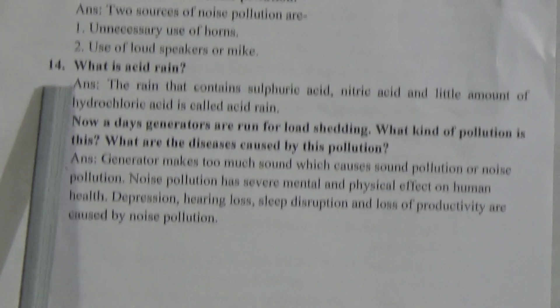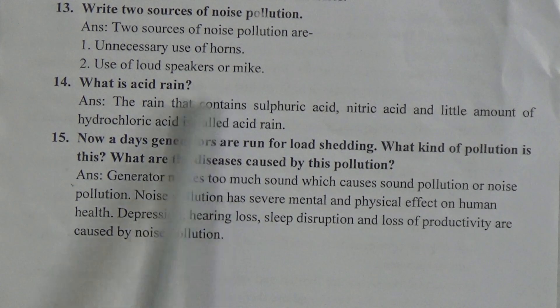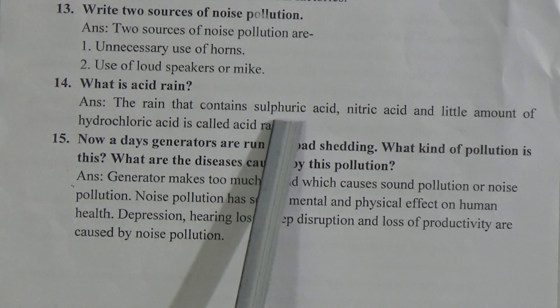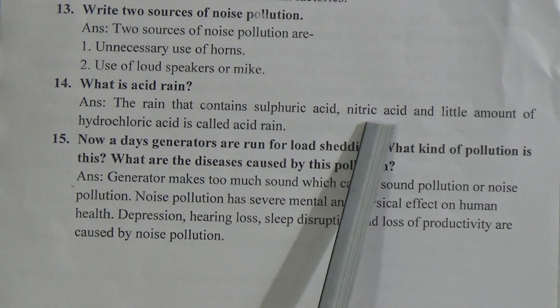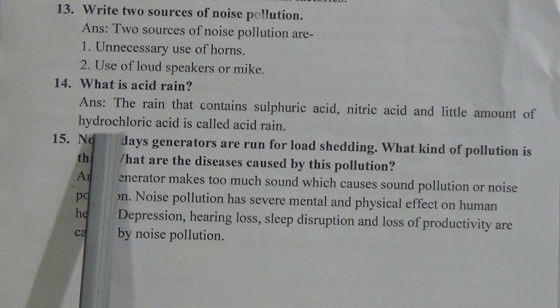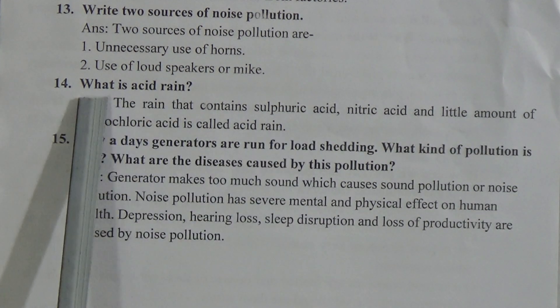Short question number 14: What is acid rain? The rain that contains sulfuric acid, nitric acid, and a little amount of hydrochloric acid is called acid rain.